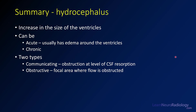In summary: hydrocephalus is an abnormal increase in the size of the ventricles. It can be acute — a sign of acute hydrocephalus is edema around the ventricles, which you usually don't have in chronic hydrocephalus. The two types are communicating, where you have resorption impairment such as with cerebral hemorrhage, and obstructive, where the obstruction is focal, as in the case we saw at the foramen of Monroe.